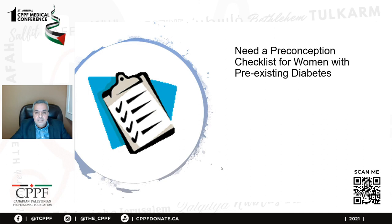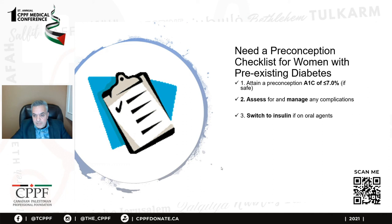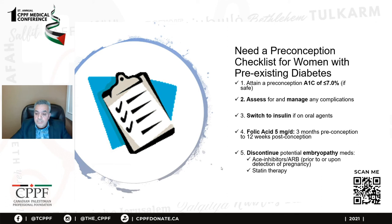The preconception checklist for women with pre-existing diabetes includes: tight glycemic control with hemoglobin A1C less than 7; assessment and management of diabetic complications like nephropathy and retinopathy before pregnancy; switching to insulin if on oral hypoglycemic agents; folic acid supplementation at least 3 months before pregnancy to 12 weeks post-conception; and discontinuation of medications not safe during pregnancy.